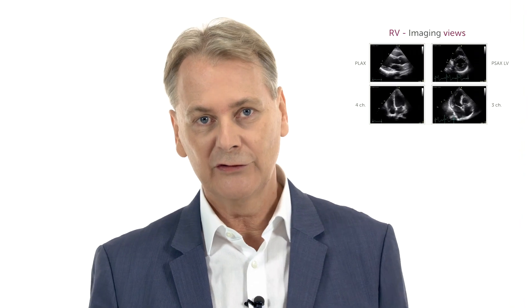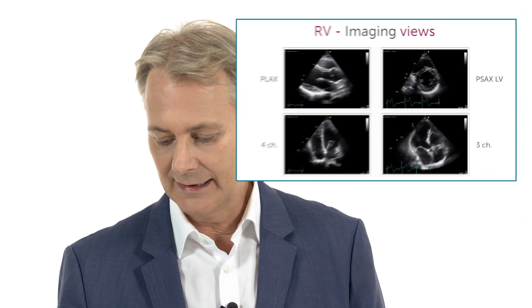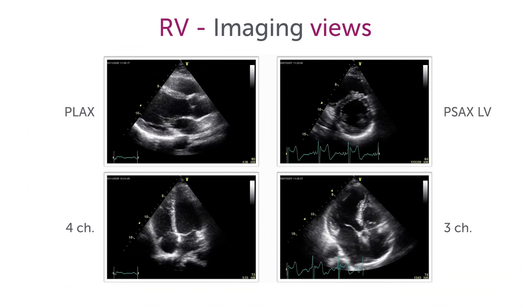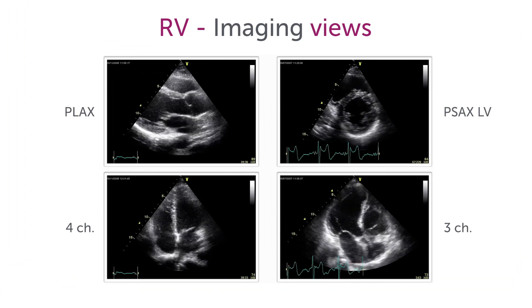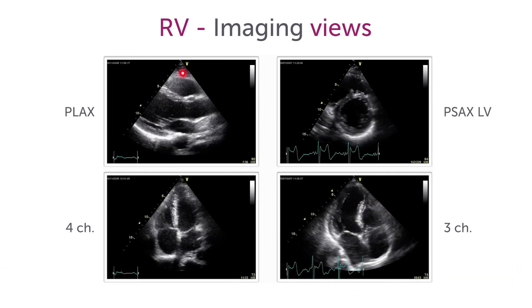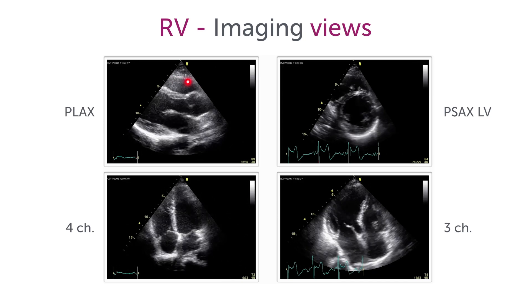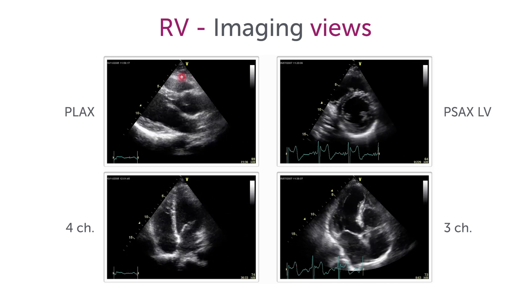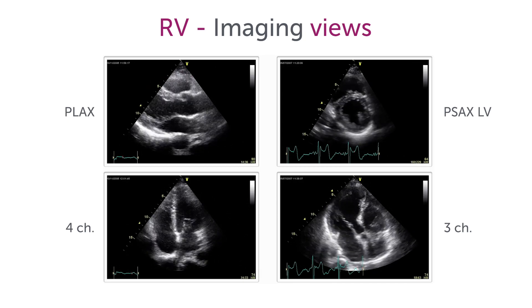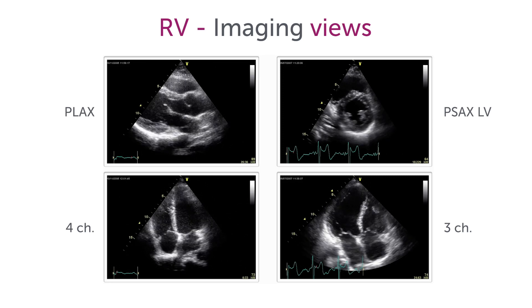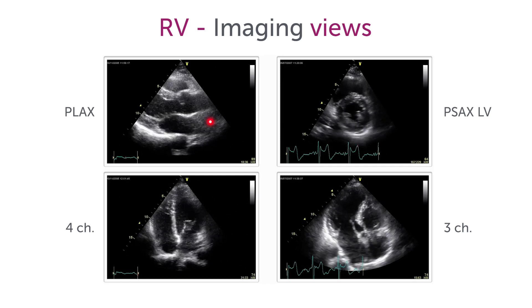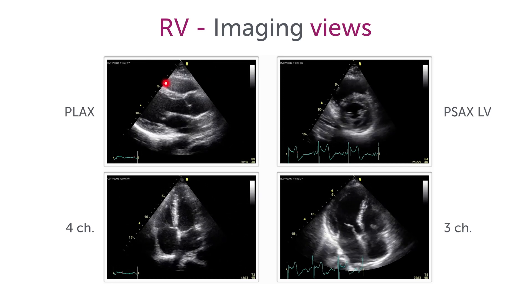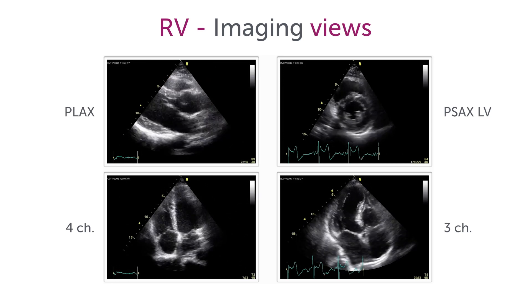There are numerous different views where we can see the right heart. We can see it in a parasternal long axis view right here, but this is probably not a good view where you want to look at right ventricle function. In some patients, you will see that the right ventricle is dilated already in a parasternal long axis view, but this is not the ideal view.